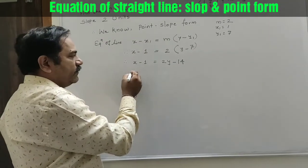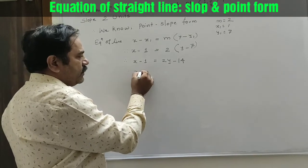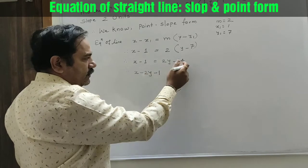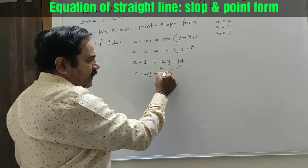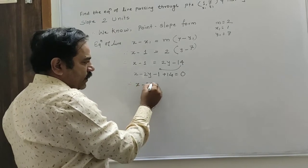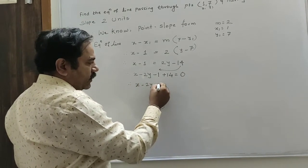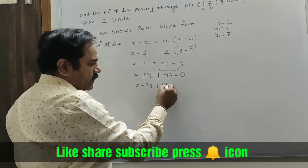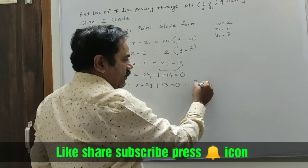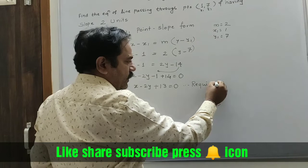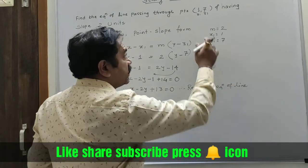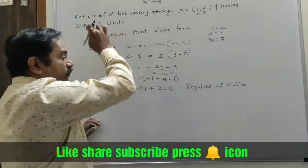Therefore, x minus 2y minus 1 plus 14 is equal to 0. So it becomes x minus 2y plus 13 equal to 0. And this is the required equation of line passing through one point and slope.